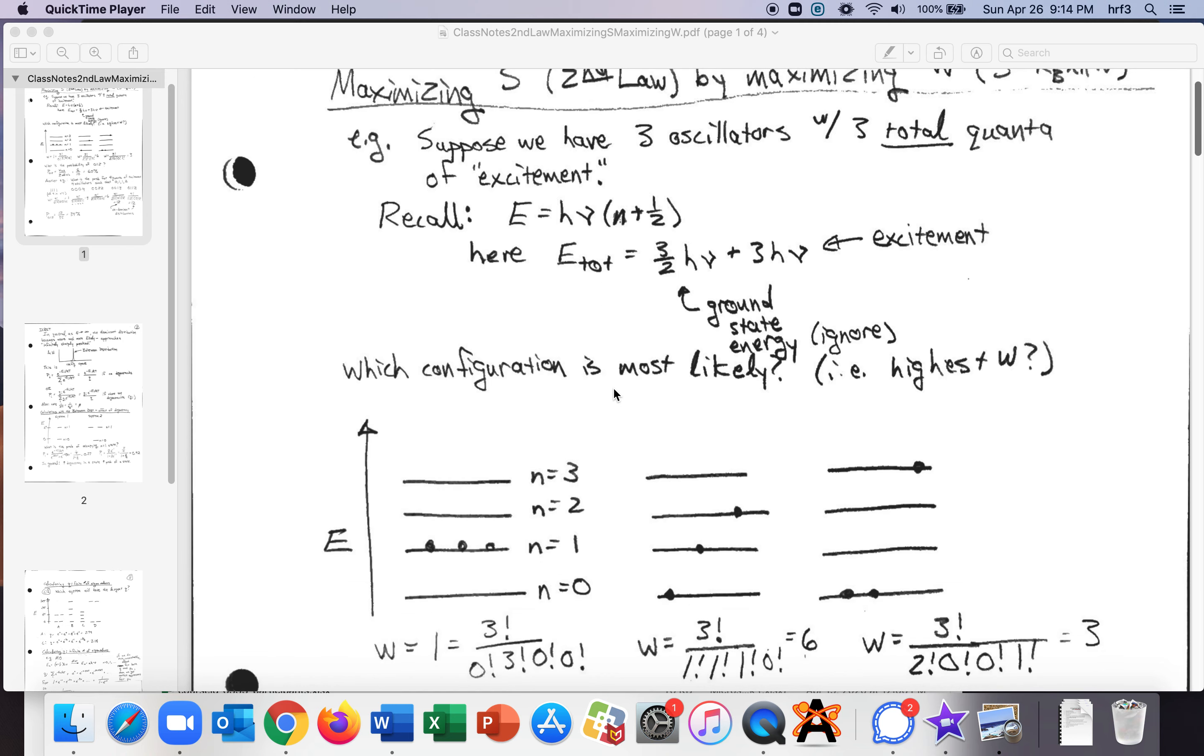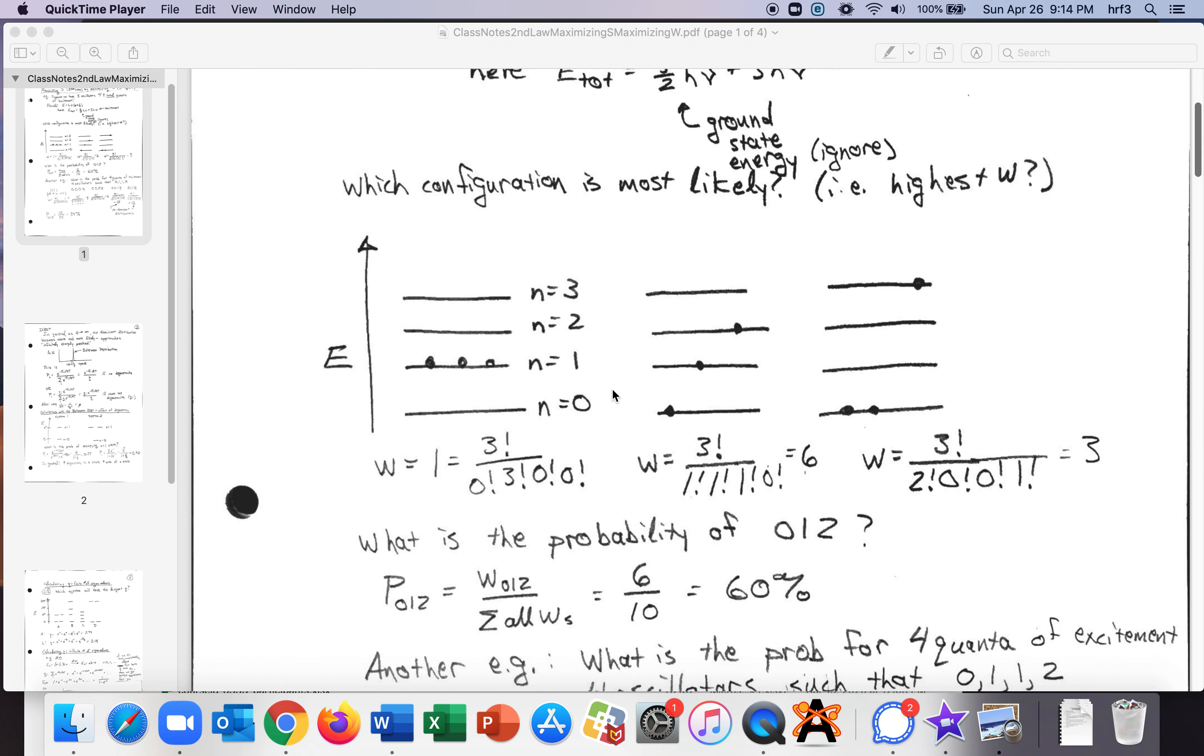So we have some possibilities. We could have all three of the oscillators in the n equals one state, and that would be one plus one plus one would be three quanta of excitement. Or we could have one in the one and one in the two. One plus two equals three. Or we could just have one in the three and two down in the zero. But these aren't all equally probable.